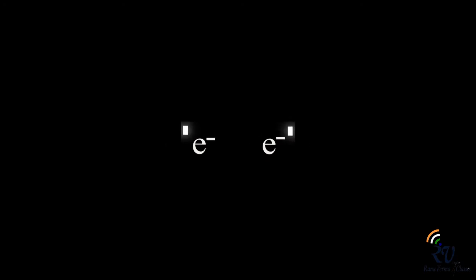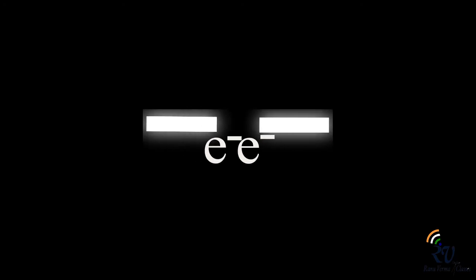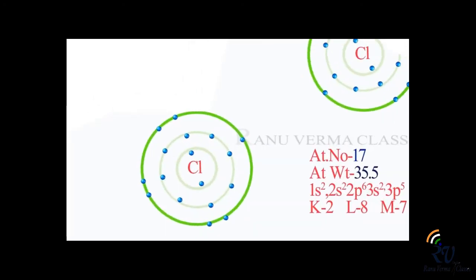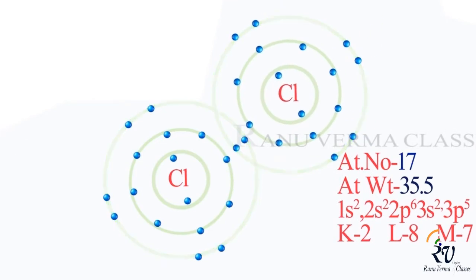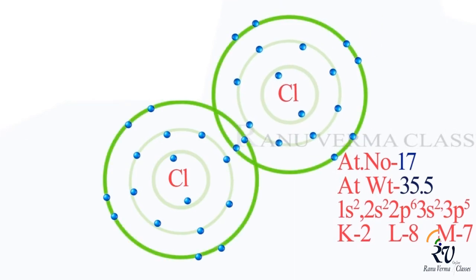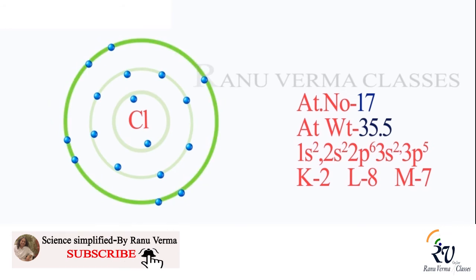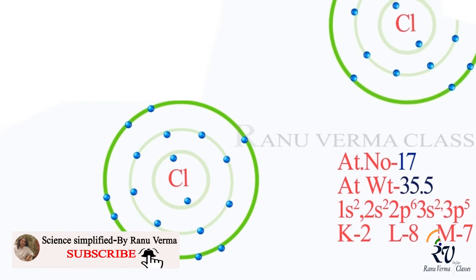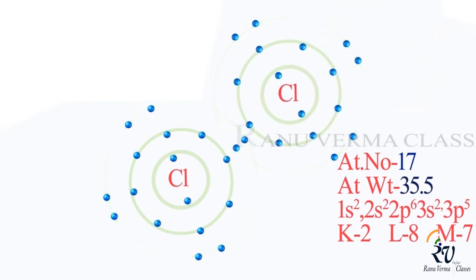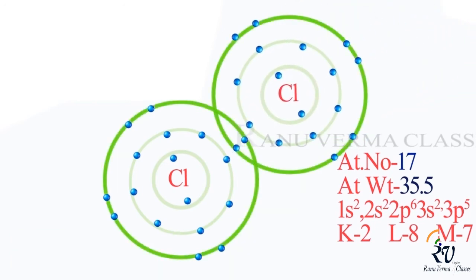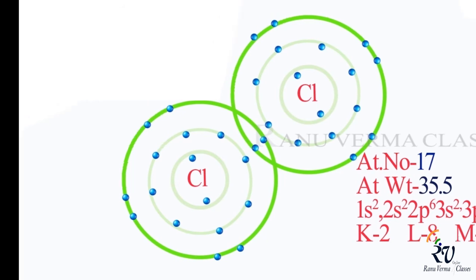Can we have an example of a covalent bond? Yes. Let us see the formation of the chlorine molecule, Cl2. Both chlorine atoms have 7 outermost electrons. Both will share 1 electron each, and in the resulting chlorine molecule, both chlorine atoms have 8 electrons in their outer shell.